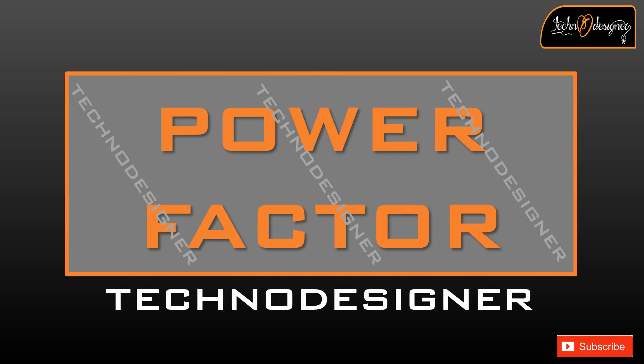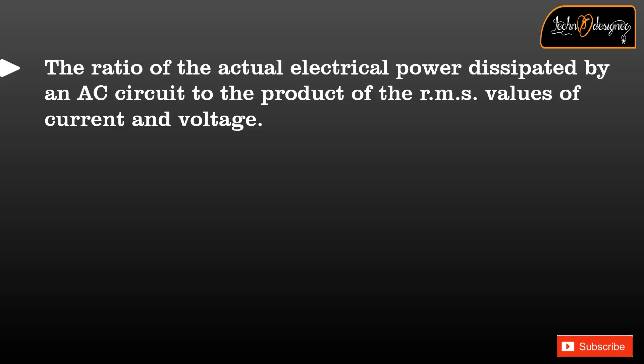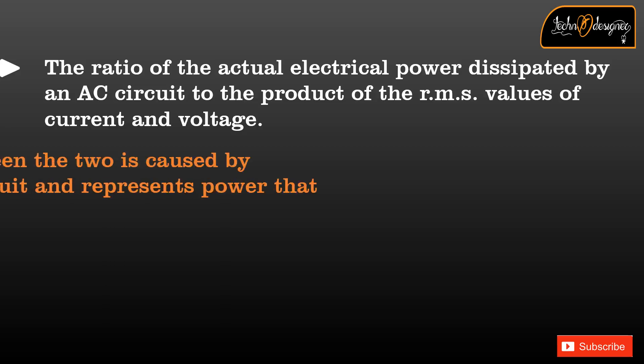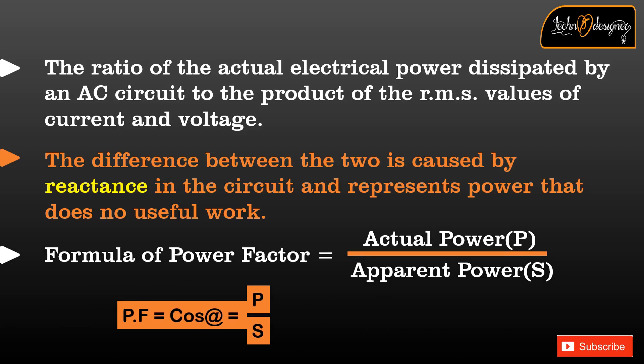Power factor, presented by Techno Designer, is the ratio of the actual electrical power dissipated by an AC circuit to the product of the RMS values of current and voltage. The difference between the two is caused by reactance in the circuit and represents power that does no useful work. Power factor is equal to the actual power divided by the apparent power.